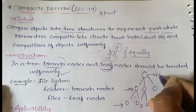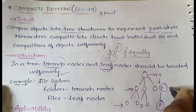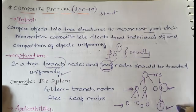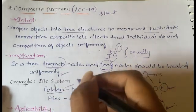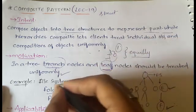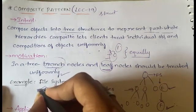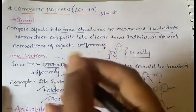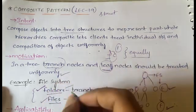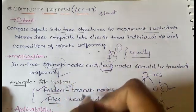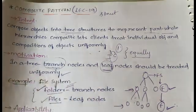Let's take an example of a file system. The file system has folders and files. Folders are the branch nodes and files are the leaf nodes. A folder is a complex or composite object because it contains multiple files or folders within it, whereas a file is a simple single object. The Composite pattern defines an interface in which both composite objects and single objects are treated in a uniform way.